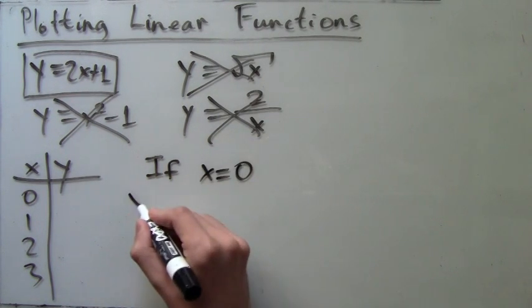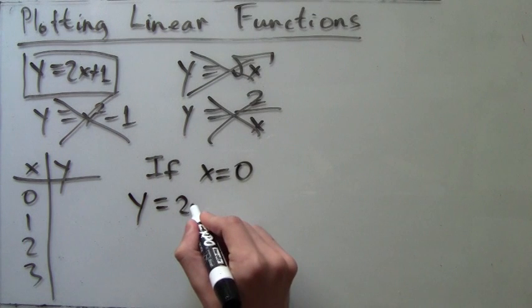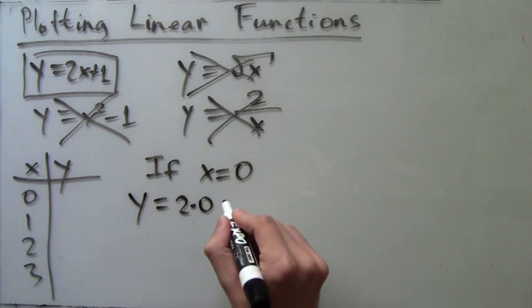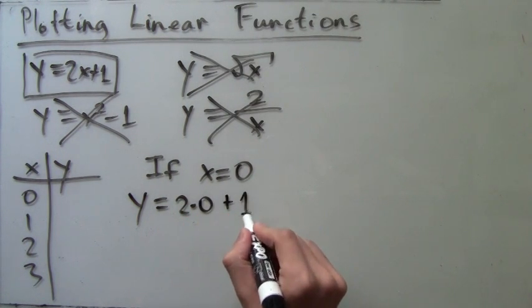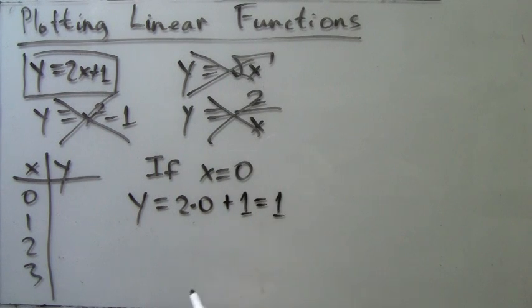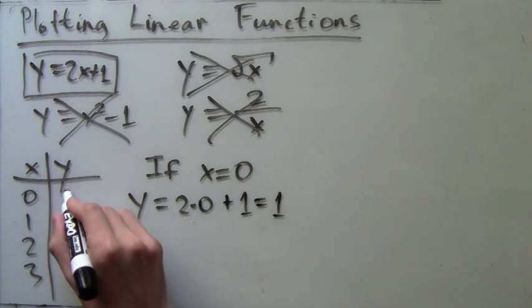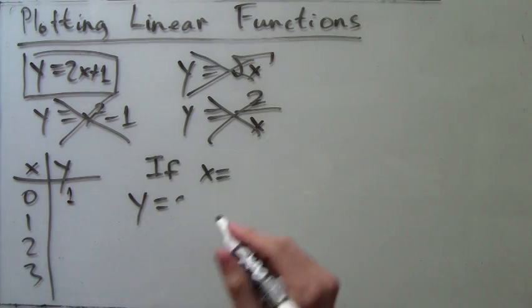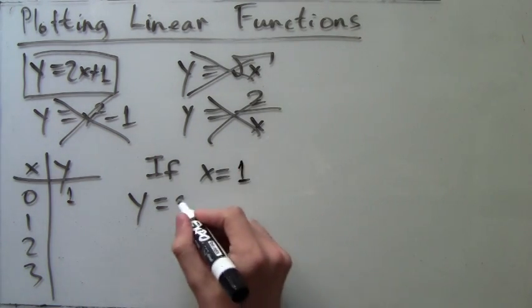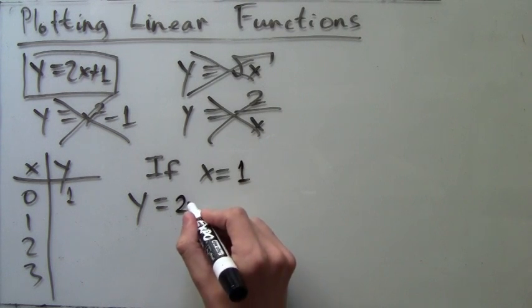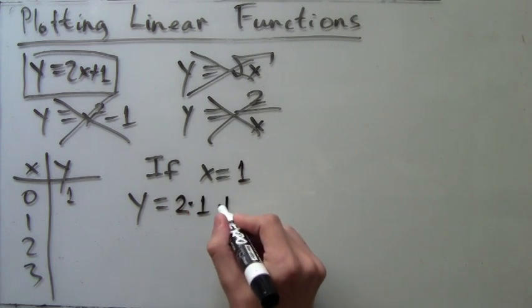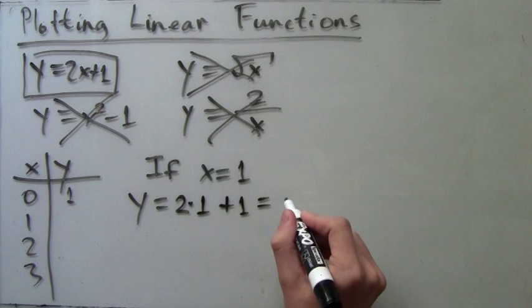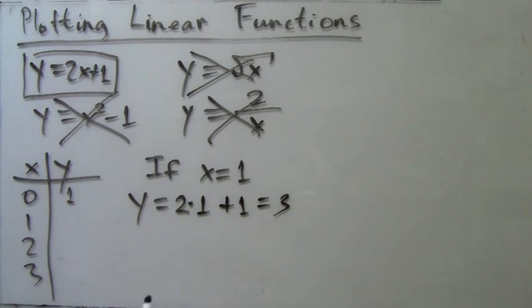If x equals 0, our function tells us that y equals 2 times 0 plus 1, which simplifies to just 1. Now all we have to do is replace x with 1. So now y is 2 times 1 plus 1, which is simply equal to 3.